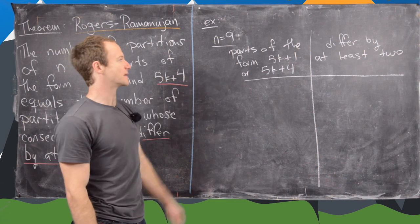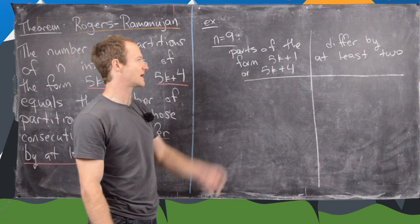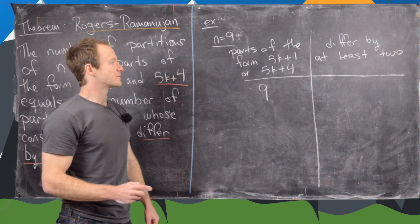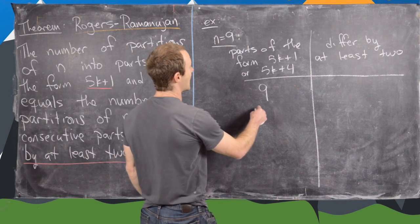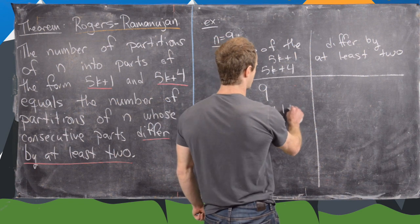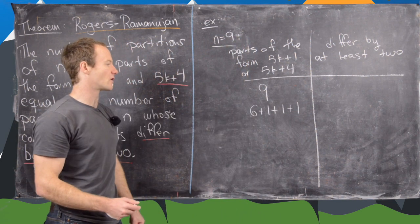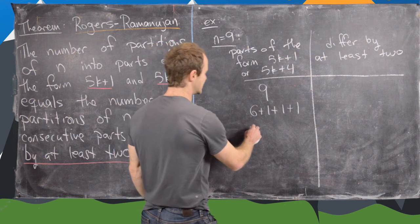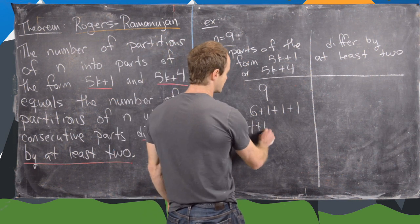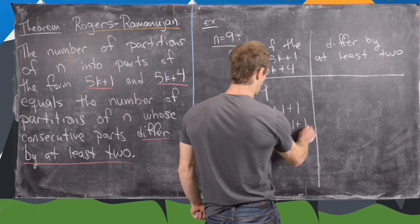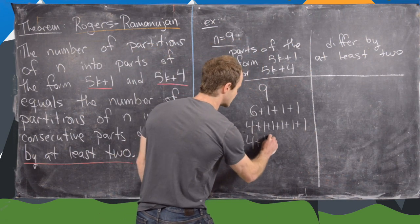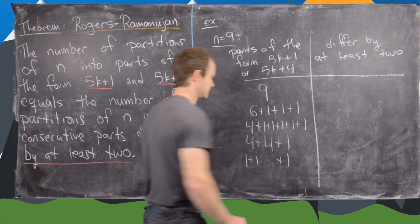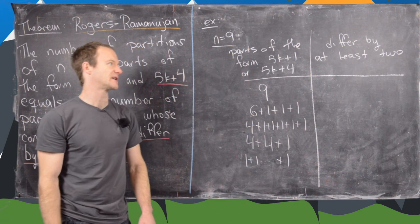If n equals 9, let's look at parts of the form 5k plus 4 and 5k plus 1. So 9 itself is a partition because 9 equals 5 times 1 plus 4. We can have 6 plus 1 plus 1 plus 1, since 6 is of the form 5k plus 1 (5 plus 1). Then 4 plus 1 plus 1 plus 1 plus 1 plus 1, then 4 plus 4 plus 1, and then all 1s. So we have 5 possibilities.